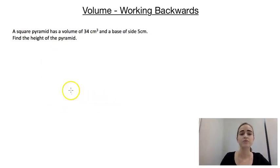Our second example tells us that a square pyramid has a volume of 34 centimeters cubed and a base side length of 5 centimeters. We're asked to find the perpendicular height of the pyramid.